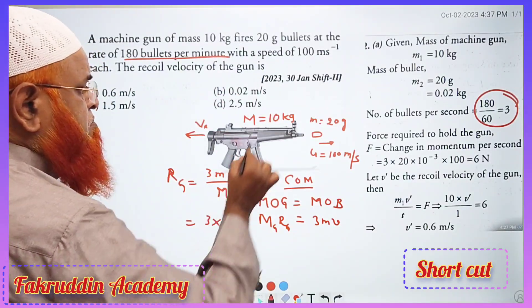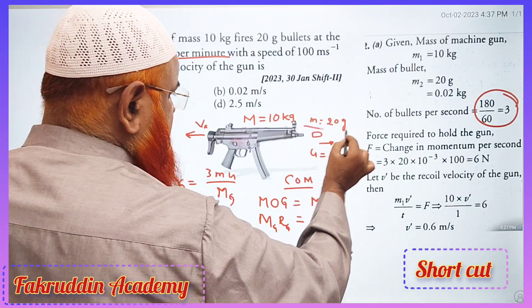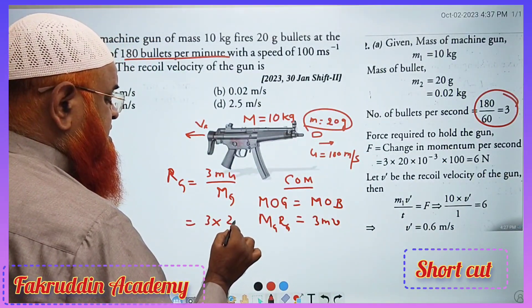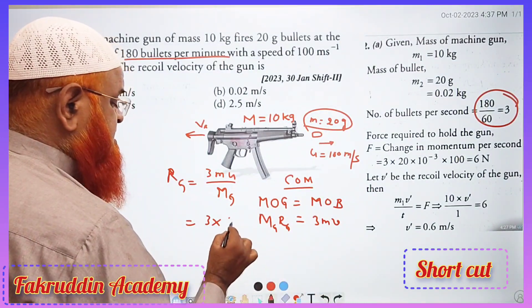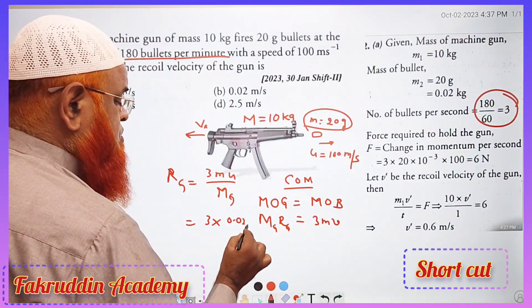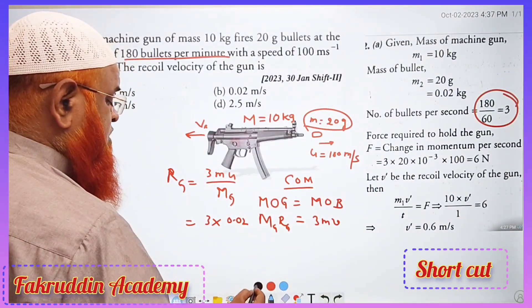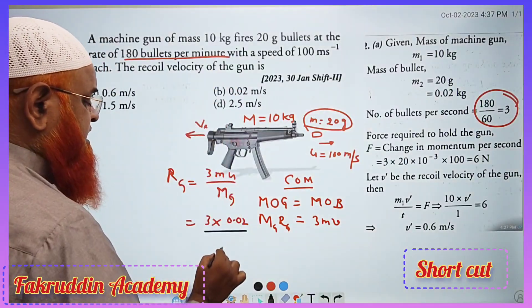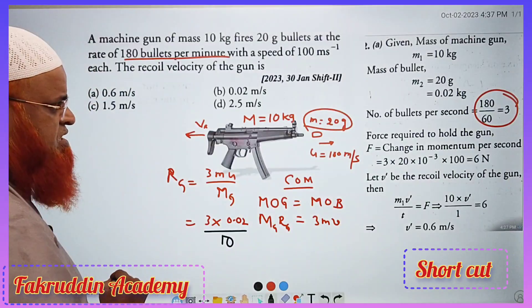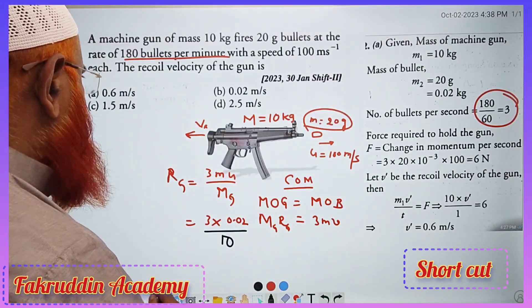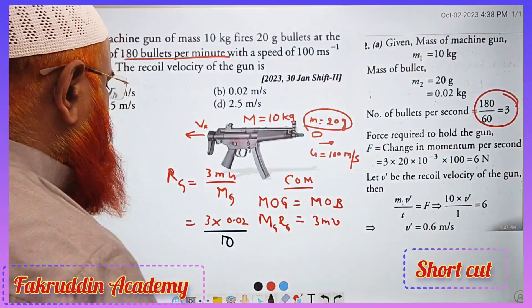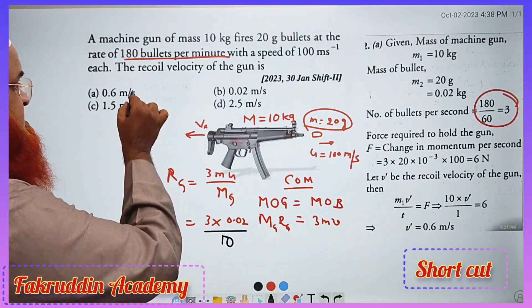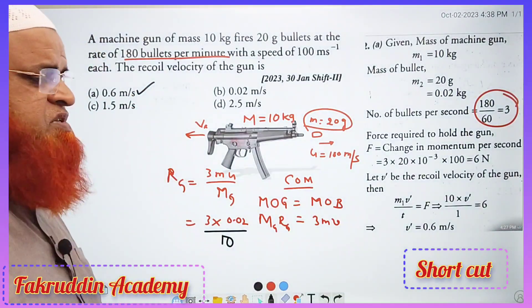There is three into — the mass of the bullet is 20 grams, so you have to take it as 0.02. Divided by the mass of the gun, which is 10 kg. So directly solving this: three times 0.02 times 100 divided by 10 gives 0.6 meters per second. In a fraction of seconds, you get the answer.